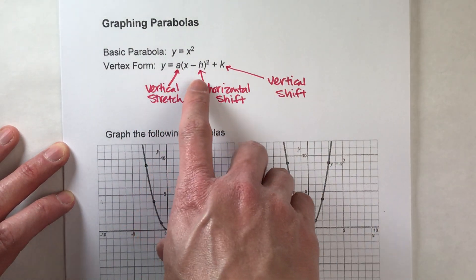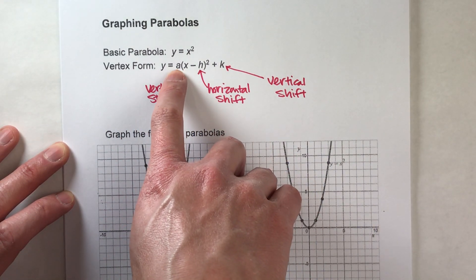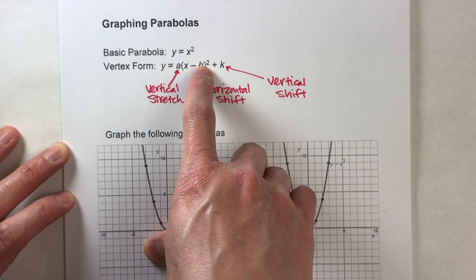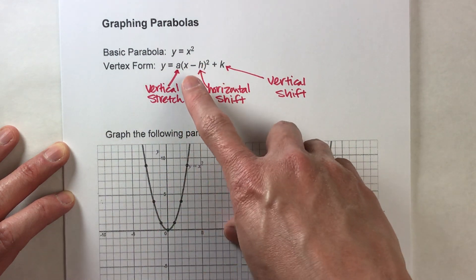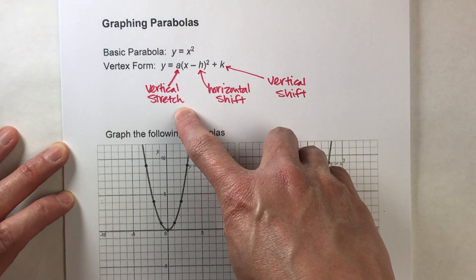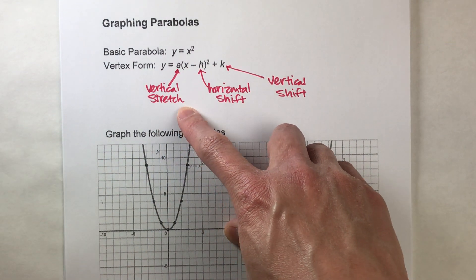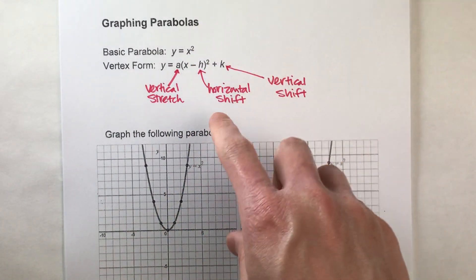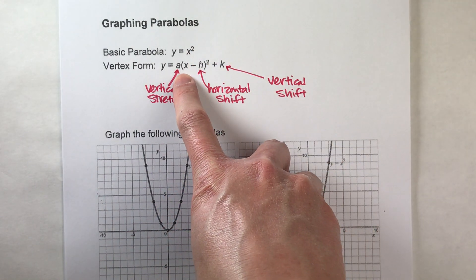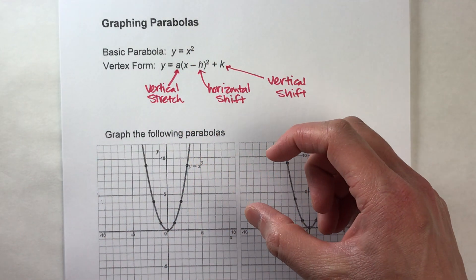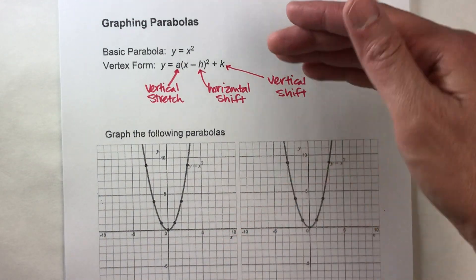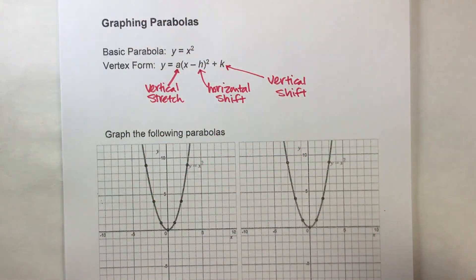The last thing to pay attention to is the number being multiplied times x squared — that's your vertical stretch. It's going to stretch the parabola vertically. Now, if it's a number less than 1, like a fraction — something between 0 and 1, like one-half — then it's going to compress it down.